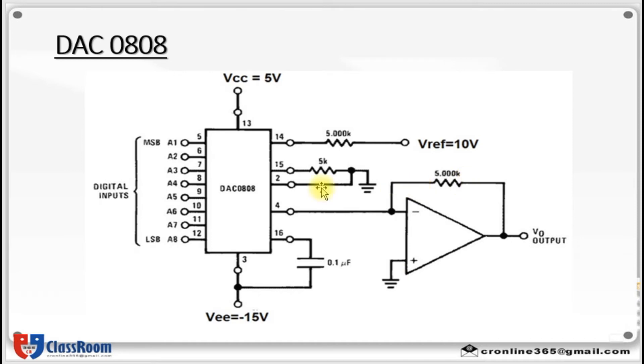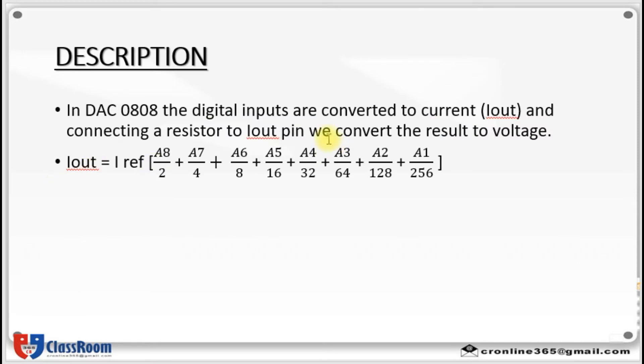The digital inputs are converted to current and by connecting a resistor to this IOT pin, we convert the result to voltage. So the total current provided by IOT pin is a function of binary numbers at the A1 to A8 inputs of DAC 0808 and reference current I reference as follows: IOT is equal to I reference times A8 by 2 plus A7 by 4 plus A6 by 8 plus A5 by 16 plus up to A1 by 256.